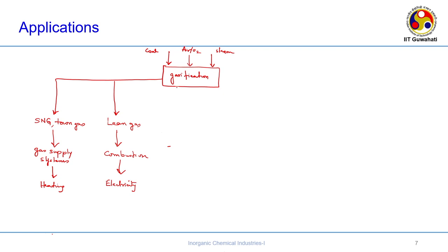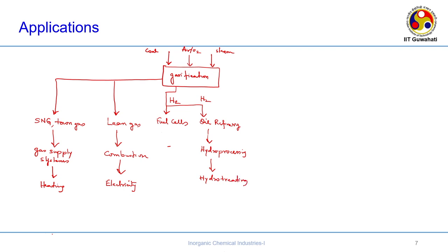If you have hydrogen from coal gasification, you can use it in fuel cells to directly generate electricity, or use it in oil refinery hydroprocessing reactions — specifically hydrotreating or hydrocracking. Hydrotreating removes heteroatoms, while hydrocracking breaks compounds to remove unsaturated rings. You can also use coal as a source to get hydrogen for these applications.